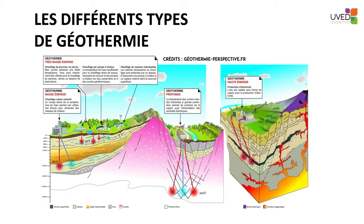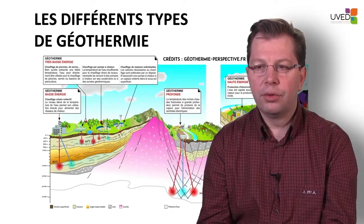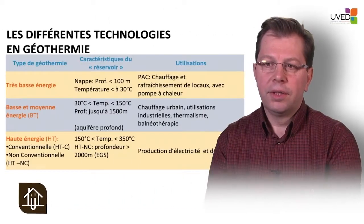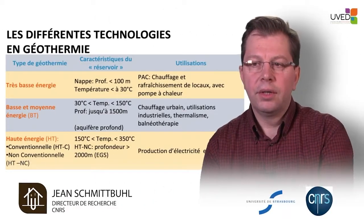The third category is high energy geothermal energy production, with two different types. The first is conventional geothermal heat production, where energy is used directly with the fluid at a much higher temperature of approximately 200 degrees. The second is the non-conventional method, with a comparable temperature, except that it is necessary to stimulate the environment to improve natural permeability, which is sometimes insufficient.